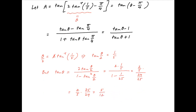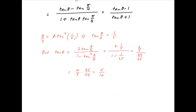This simplifies to 5 upon 12. Substituting the value of tan θ into the expression for a — which is (tan θ minus 1) divided by (tan θ plus 1) — we get a equals 5 upon 12 minus 1 divided by 5 upon 12 plus 1.